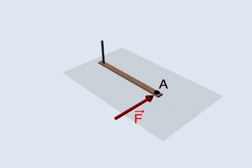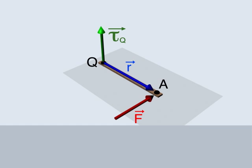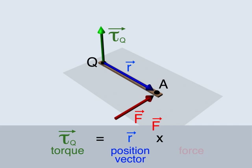The position of point A is measured with respect to the axle. This is point Q. The torque about point Q, due to the applied force, is given by the vector product of vector R and vector F.